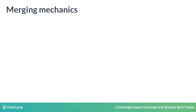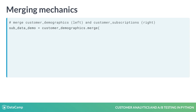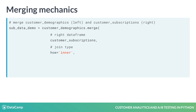As in SQL, we have a left and right table. We call the merge method on one of our data frames, and this is considered the left data frame — in this case, our demographics dataset. Next, we specify the right data frame as our first argument, in this case the subscriptions data. Then we specify the how argument, which can be one of four values: inner, outer, left, or right, each analogous to a SQL join.